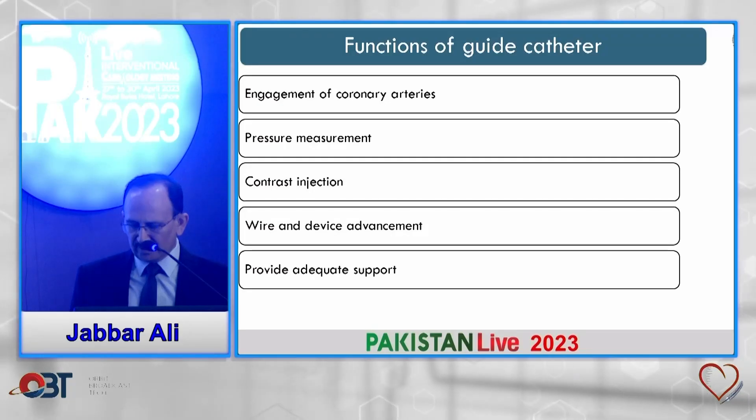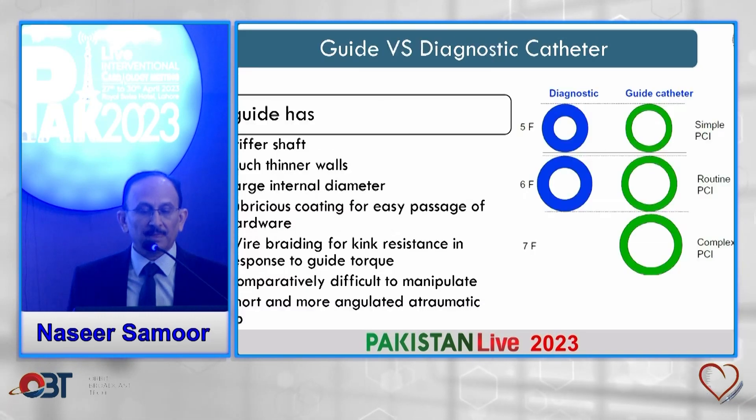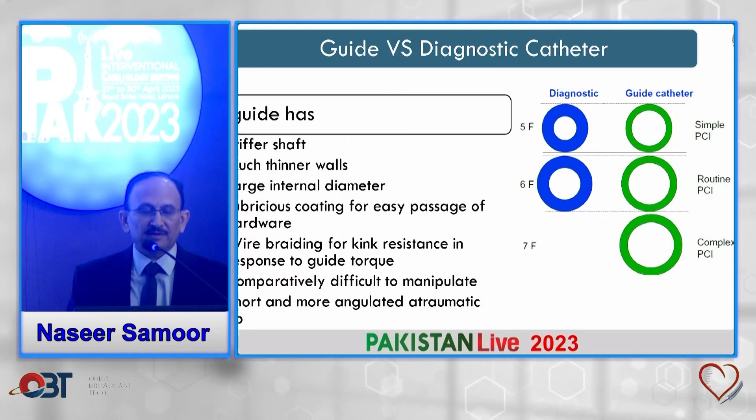There are different components: the hub, shaft, secondary curve, primary curve, and a tip. The various functions of guide catheters include engaging the coronary arteries, pressure measurements, contrast injection, wire and device advancement, and delivery into the coronary arteries.